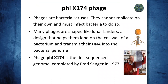Our first task will be to assemble a small φX174 phage. Phages are bacterial viruses, and they cannot replicate on their own and must infect bacteria to do so. Phage φX174 is almost like a cult organism in genomics, because it was the first sequenced genome, completed by Nobel Prize winner Fred Sanger in 1977.